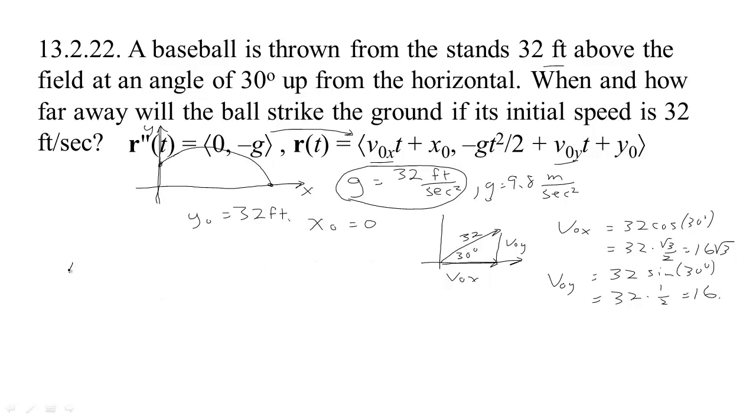So now we have a complete equation for our motion, I think. V-not-x is 16 root 3 times t plus x-not, we said, was 0, so I'll just leave that off. And then we have minus 32 over 2, that's minus 16 t squared.